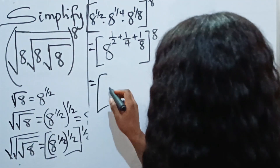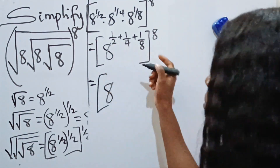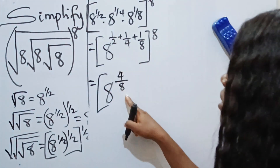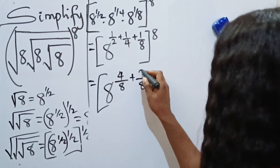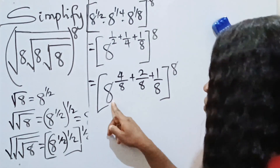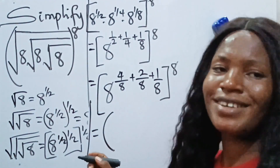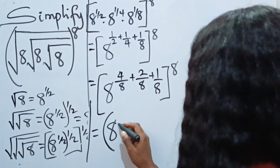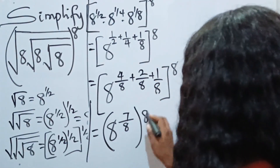We have 8 as the base. Since the LCM is 8, we convert: one half becomes four eighths, one quarter becomes two eighths, and we already have one eighth. So four plus two plus one gives us 7, all over 8. Everything is still raised to the power of 8, giving us 8 to the power of seven eighths, all raised to the power of 8.